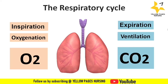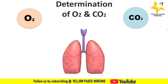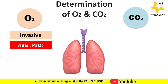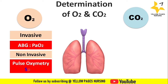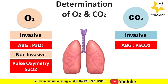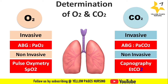In determining oxygenation status, invasively, arterial blood gas analysis is done to determine the partial pressure of oxygen; non-invasively, pulse oximetry determines the SpO2 level. In determining ventilation status, invasively, arterial blood gas analysis determines the partial pressure of carbon dioxide, and non-invasively, capnography determines the EtCO2 level, measured breath by breath at the end of the expiratory phase.